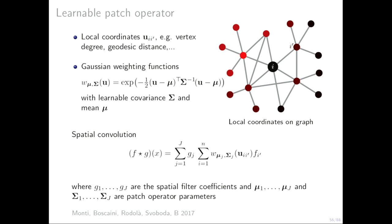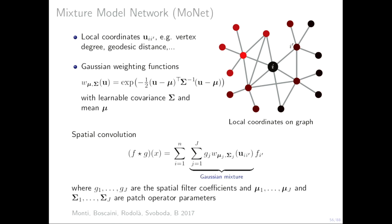You can think of it as a Gaussian mixture model where the weighting functions are Gaussians with learnable mean vector and covariance matrix, and their amplitudes are the coefficients of the filter. We call this the Mixture Model Network, or MoNet for short.